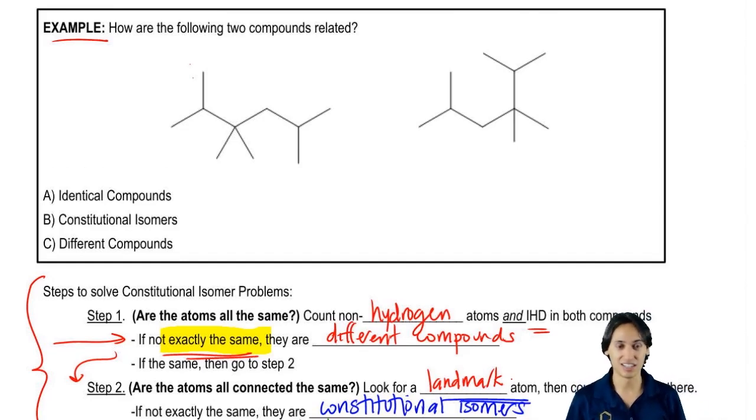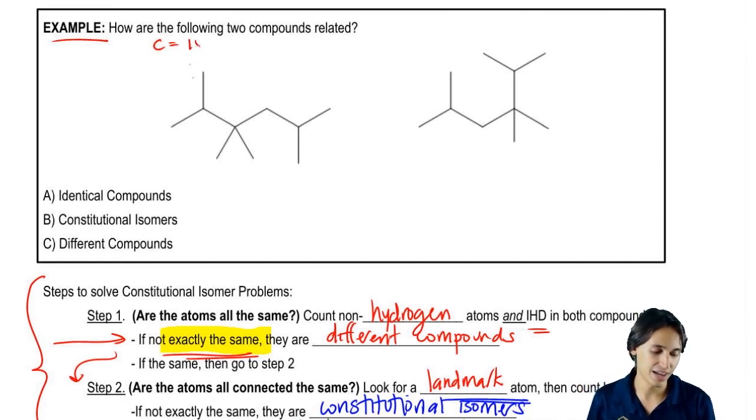All right, so this one was tricky, but what I want to show you guys is first of all, let's count up IHD and carbons. So carbons for this one was 10 and carbons for this one was 10.